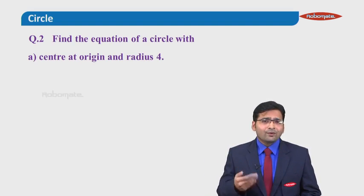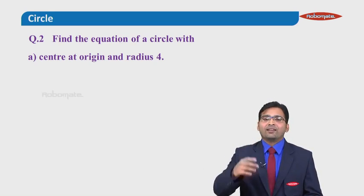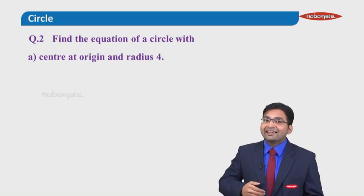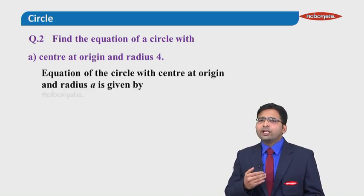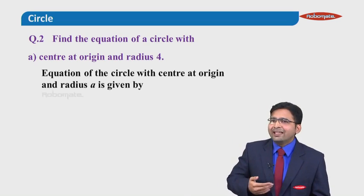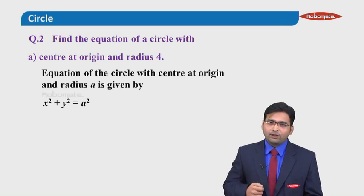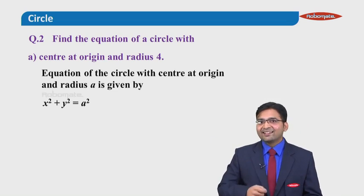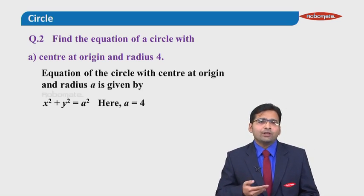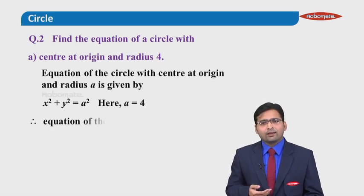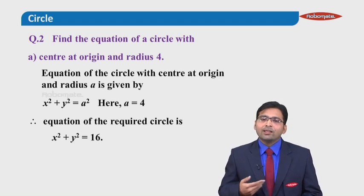Question 2 says: find the equation of circle with center at origin and radius is 5. Since the center is at origin, it is a Type 1 problem — a standard circle. We know the equation is given by x square plus y square equals to a square. Radius is given as 4, so a value is 4. Substituting, the equation of the required circle becomes x square plus y square equals to a square, that is 16.